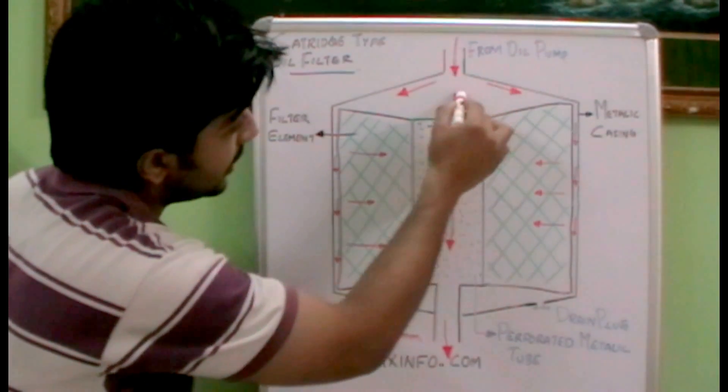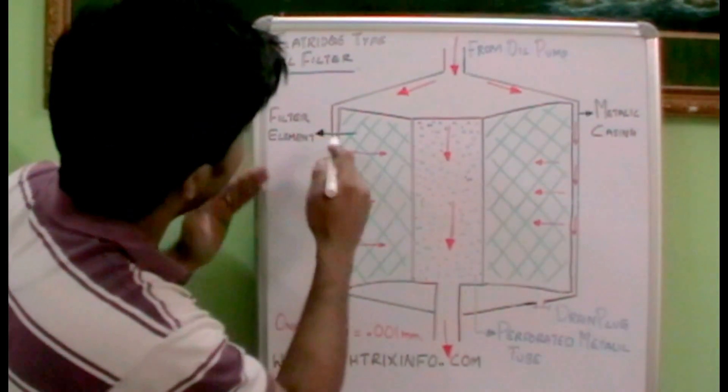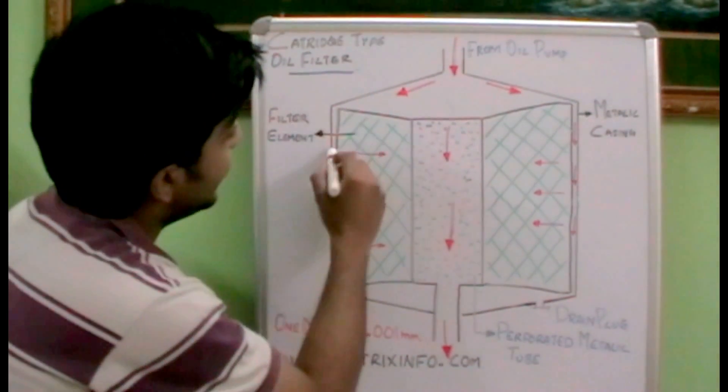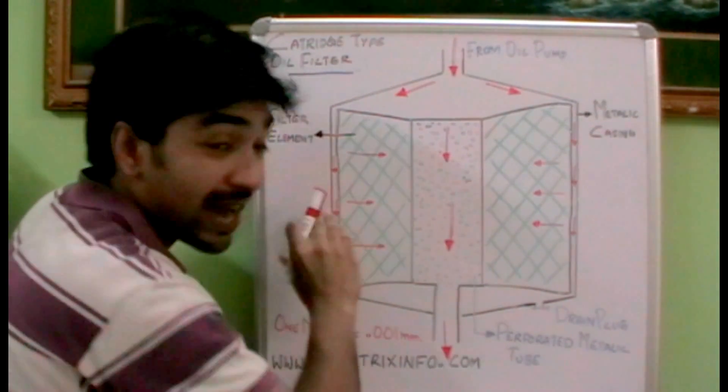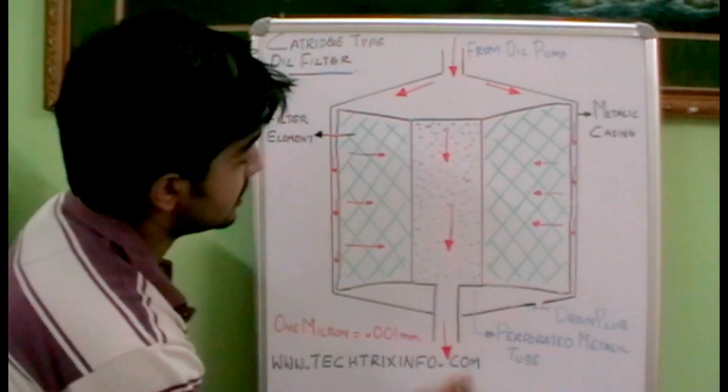So what happens is the oil coming from here enters through here and passes through the outer of the filtering element, and it enters the filtering element and passes through the filtering element, gets into the perforated metallic tube and again passes through the system.